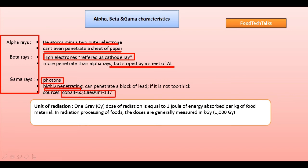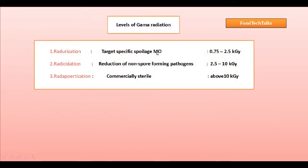The unit of radiation is the gray, denoted by Gy. One gray dose of radiation is defined as one joule of energy absorbed per kilogram of food material. In radiation processing of food, doses are generally measured in kilogray.